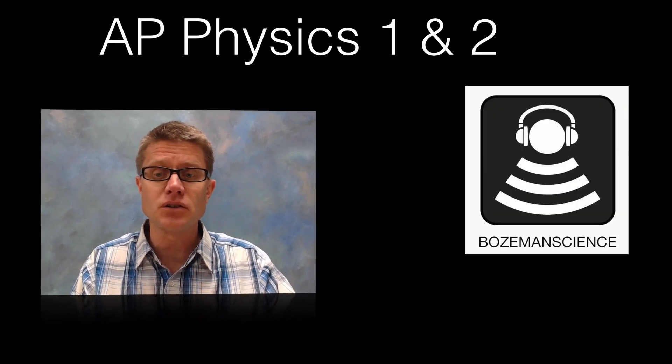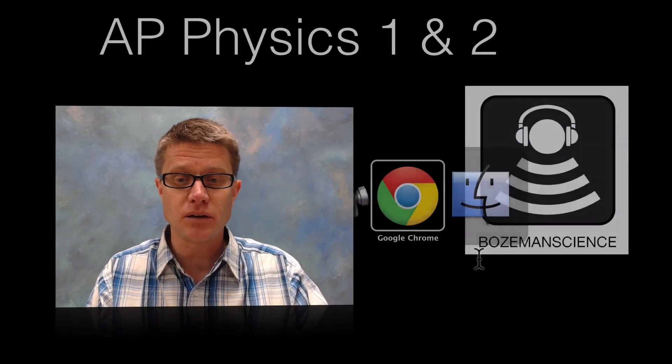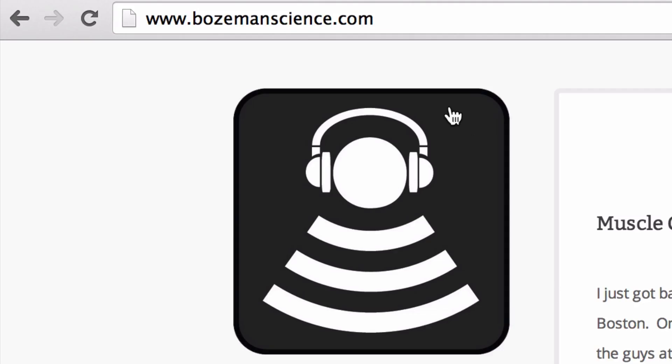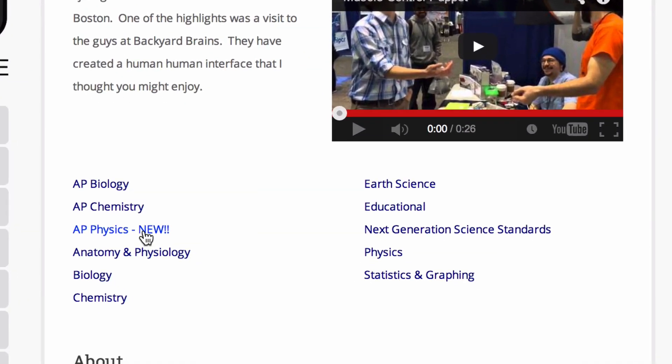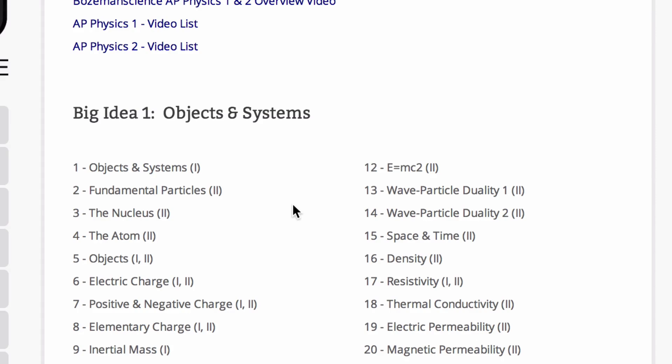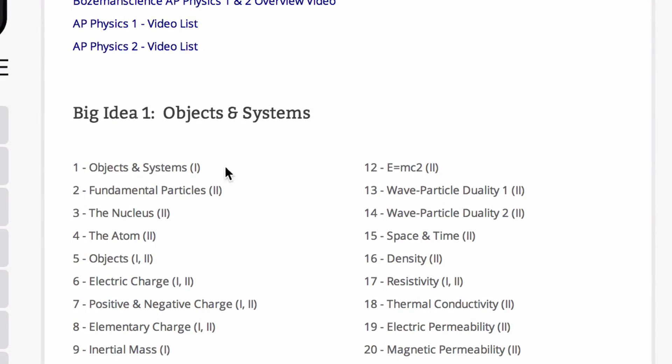So how do you find all the videos and know which ones to watch? I will have a link on my website. Let me kind of jump to the website and we will take a look at that. If you look on the homepage at BozemanScience.com, you can see there is a new link for AP Physics. If you click on that it is going to show you all the videos, 137 of them, and they are organized under these what are called Big Ideas.